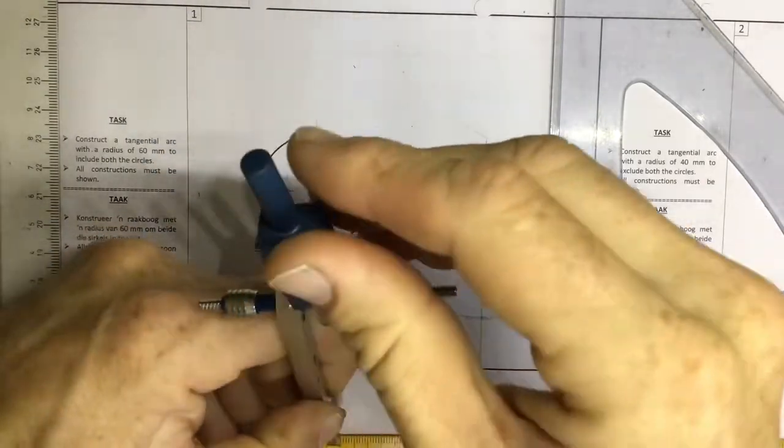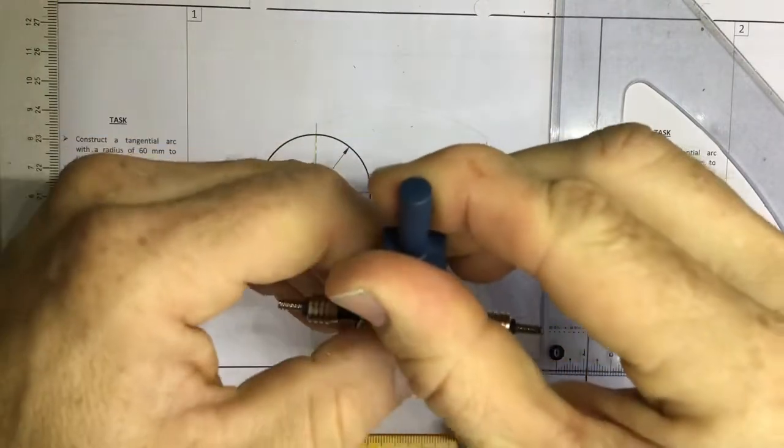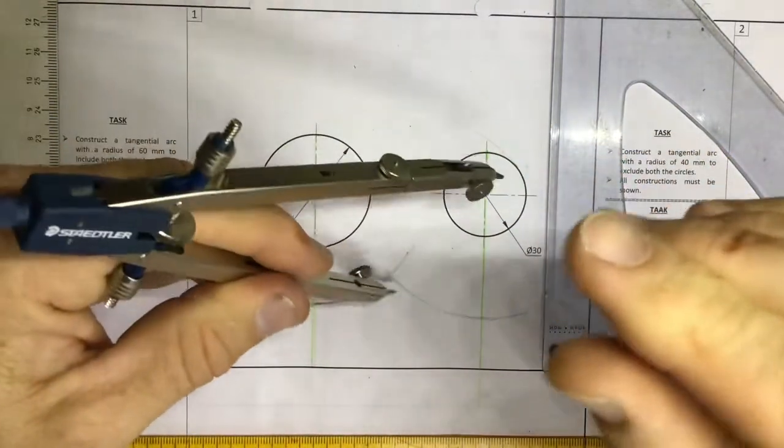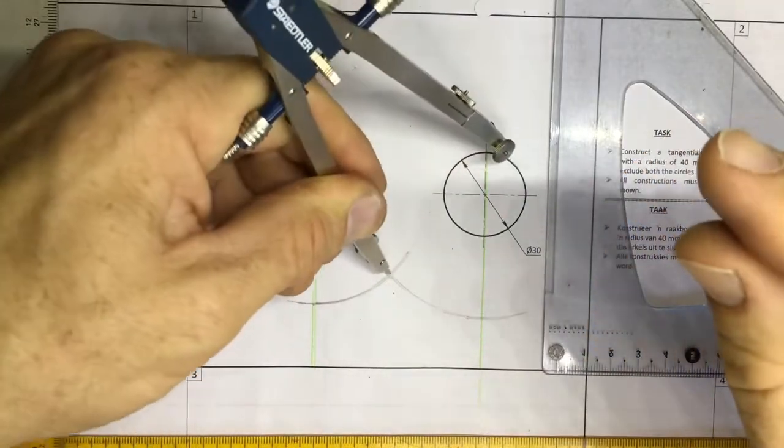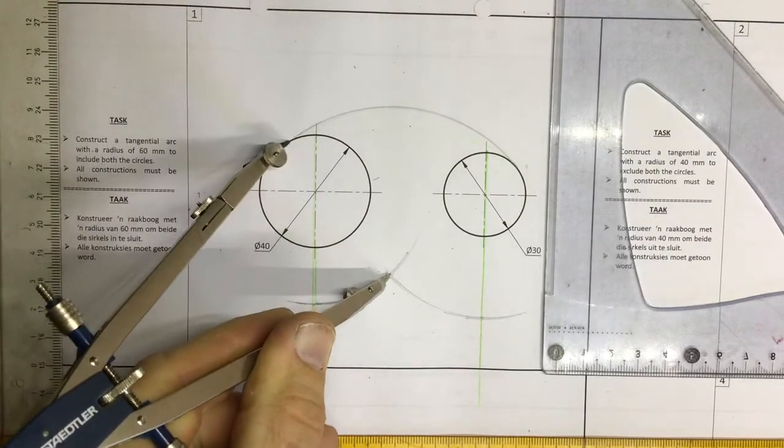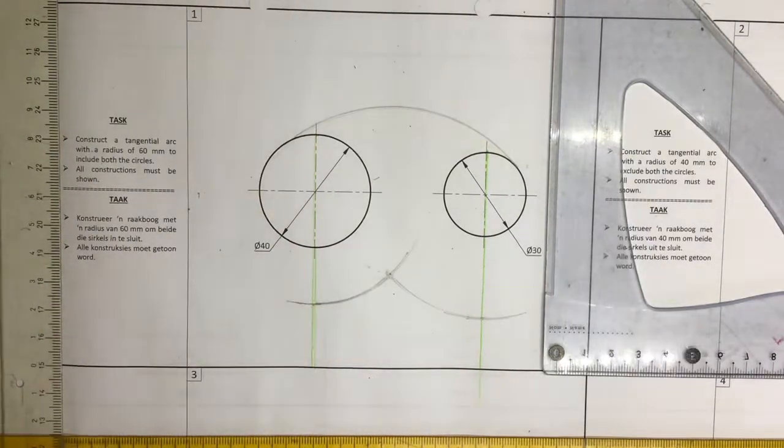And set my pair of compasses to my 60 again. Place it in at that point over there and I will have an arc which includes both circles.